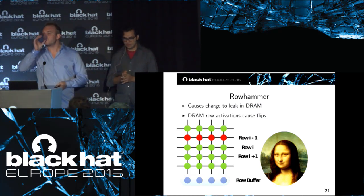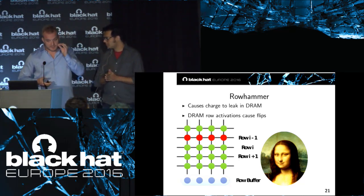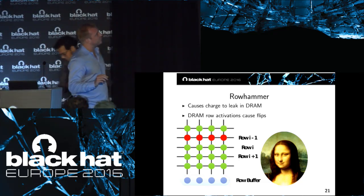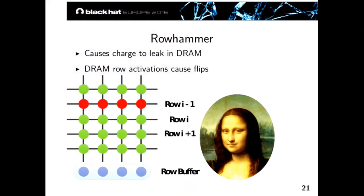Rowhammer is a widely occurring glitch in DIMM modules. Memory is organized in DRAM chips in rows of cells — each cell is a single bit, implemented as a capacitor and a transistor. The capacitor stores charge representing zero or one. Whenever the RAM controller wants to read from DRAM, it does so a row at a time — the source row is copied to the row buffer where the memory controller reads the data. Because the capacitors are so small, they leak all the time, which is why DRAM has to be refreshed periodically.